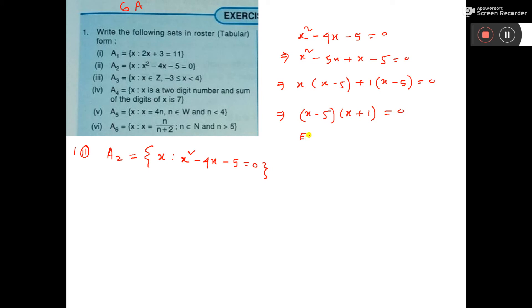Now either x - 5 = 0 or x + 1 = 0, giving us x = 5 or x = -1. So we get A₂ in tabular form as {-1, 5}. This is the answer.